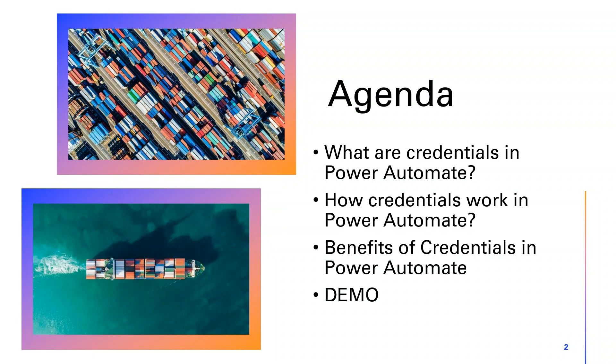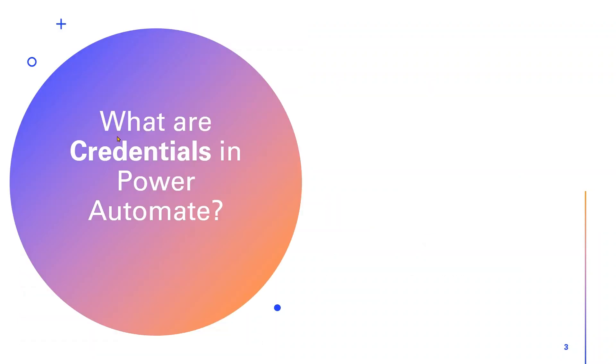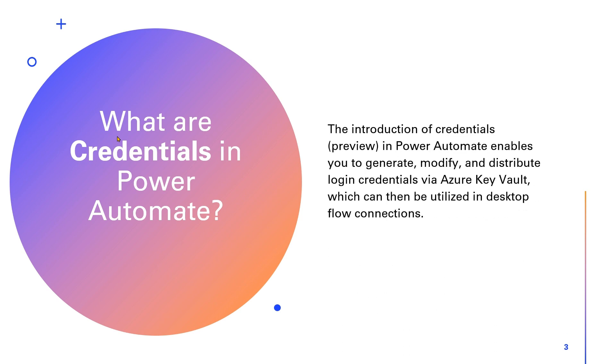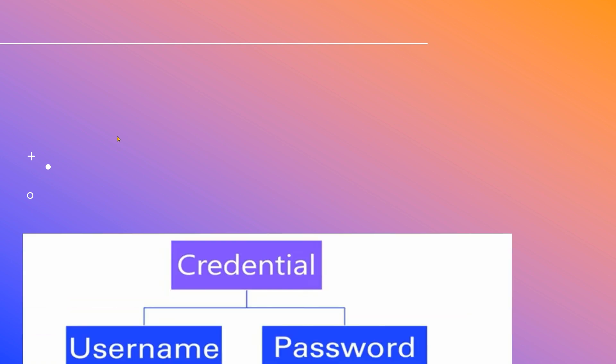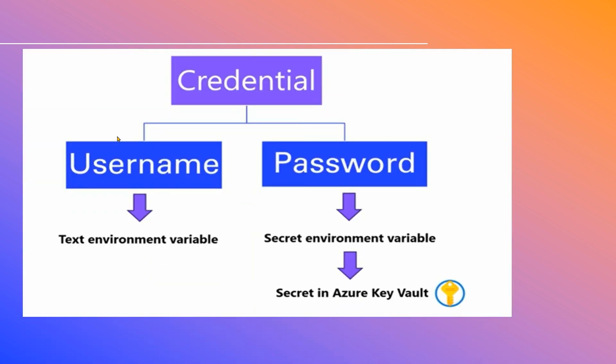Credentials in Power Automate enable you to generate and modify login credentials via Azure Key Vault, which can be utilized in desktop flow connections. Credentials are managed through two types of environment variables: the first is the text environment variable, and the second is the secret environment variable, which points to a secret in the Azure Key Vault.